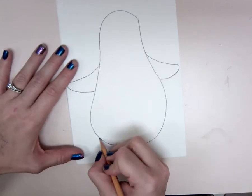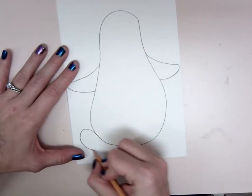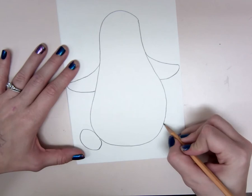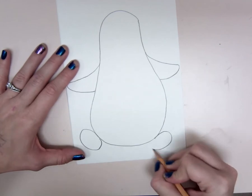Then the next step is drawing two oval feet. You can make them look like the penguin is kicking or a little bit lower, it's up to you.